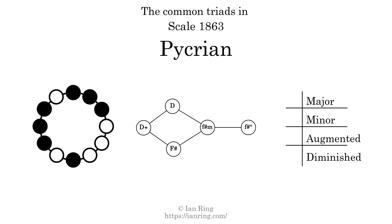Here are the common triads present in this scale. The diagram in the center is a graph of parsimonious voice leading between triads. There are two major triads, one minor triad, one augmented triad, and one diminished triad.